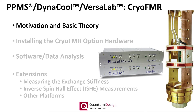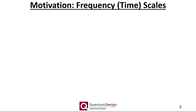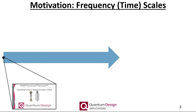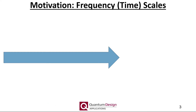Starting with some motivation and basic measurement theory. In order to motivate the utility of a broadband FMR measurement, I will use measurement frequency to demonstrate how FMR fits within the magnetic measurement capabilities offered by Quantum Design. We will discuss our measurement capabilities as a function of increasing frequency. Starting at the DC limit, we have our vibrating sample magnetometer, or VSM, option. Here we are only interested in the length of the magnetic moment vector as a function of static DC magnetic field and/or temperature. The VSM is discussed at length in the VSM option webinar, which can be found on our YouTube channel.